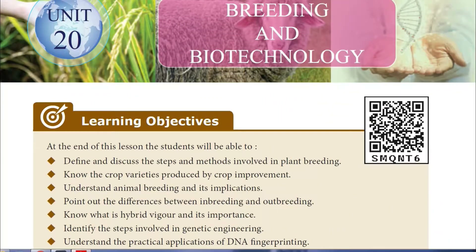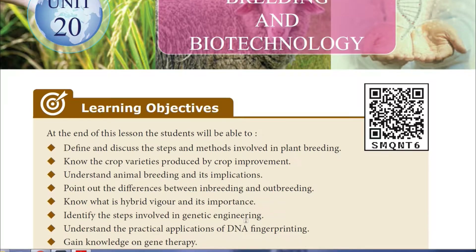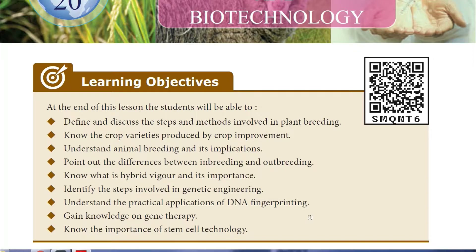What are we going to learn in this lesson? We are going to define and discuss the steps and methods involved in plant breeding. We will know different varieties of crops produced by crop improvement. We will understand animal breeding and its application, differentiate between inbreeding and outbreeding, learn about hybrid vigour and its importance, identify the steps involved in genetic engineering, understand the practical applications of DNA fingerprinting, gain knowledge on gene therapy, and know the importance of stem cell technology.